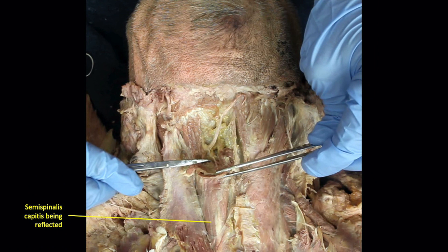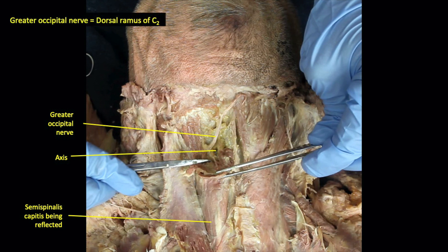We now reflect the semispinalis capitis to show the greater occipital nerve emanating from above the axis. Remember that in the cervical region, the spinal nerves emanate from the vertebral column above the vertebra with the same number. Thus, the greater occipital nerve, which is the dorsal ramus of the C2 spinal nerve, exits the spinal column above the axis, which is the second cervical vertebra.